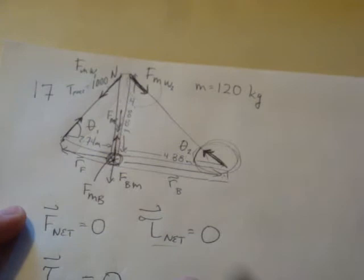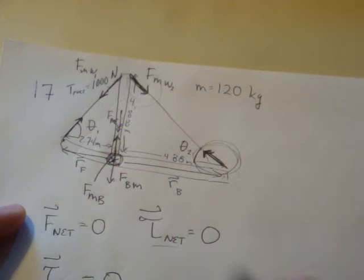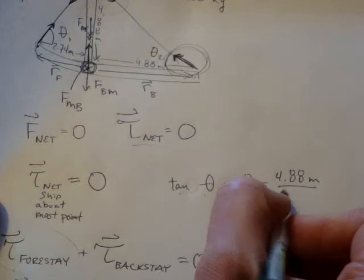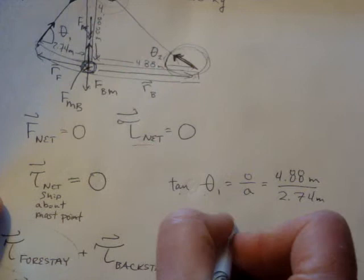Theta1 is going to be equal to tangent of theta1 equals opposite over the adjacent side. And the opposite side here is 4.88 meters. Oh, I'm sorry about that. So tangent of theta1 is equal to the opposite over adjacent side. So that's 4.88 meters over 2.74 meters.